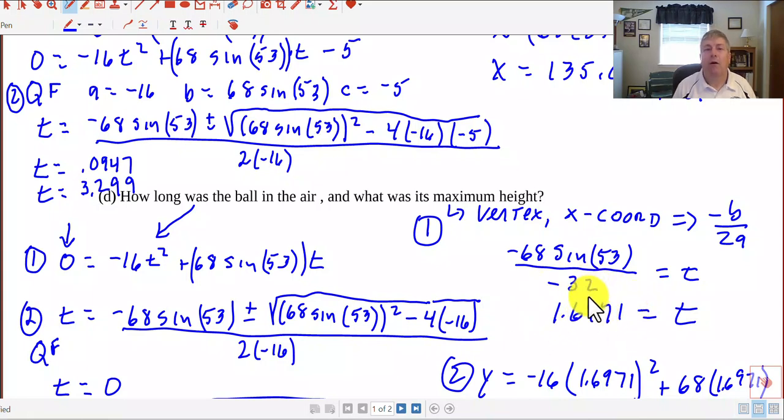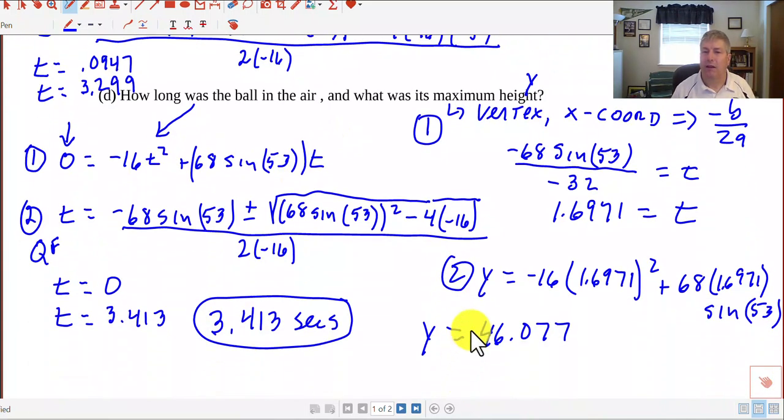Well, now we want to find the maximum height. Height is a y, but I've got the t. So a little bit different. We're going to use the same formula, but we're going to substitute in for t. y equals -16(1.6971)² + 68 times 1.6971 sin(53°). And I put all that in my calculator and I get y equals 46.077.